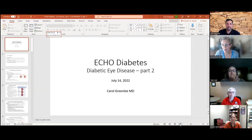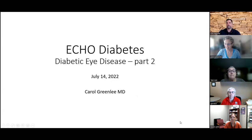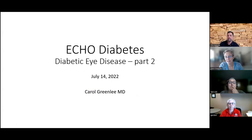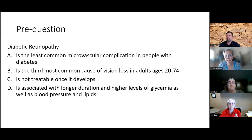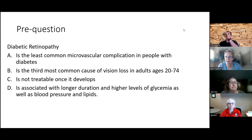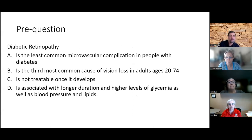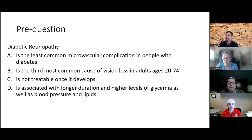This is part two of diabetic eye disease. I'll do a little recap to bring us back to what we talked about last time. The questions were: is diabetic retinopathy the least common microvascular complication? Is it the third most common cause of vision loss in working age adults? Is it not treatable once it develops? Or is it associated with longer duration and higher levels of glycemia, blood pressure, and lipids?